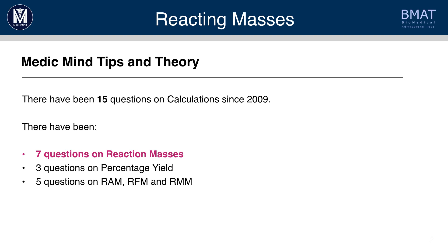There have been 15 questions on calculations since 2009, making it the most commonly tested chemistry topic. To be specific, there have been 7 questions on reaction masses. So we will look at this first, before looking at percentage yield and relative atomic mass in the next two tutorials.